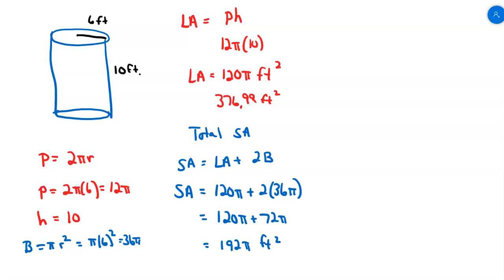If I want a decimal approximation — for example, if I were going into a store and saying I need enough paint to cover something — I wouldn't say 192 pi square feet. I would say roughly 603.186 square feet. That's how you find lateral area and surface area of a cylinder.